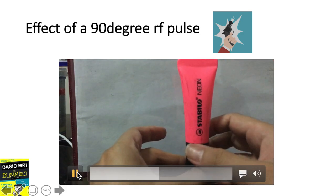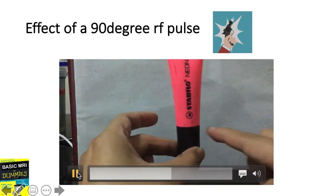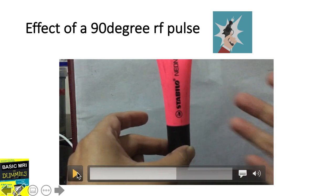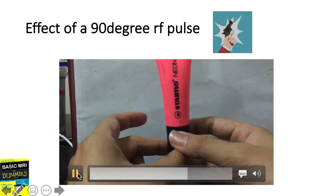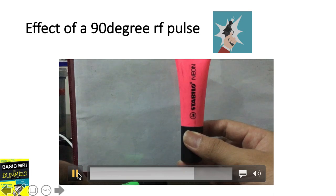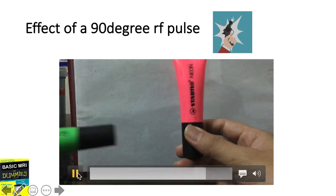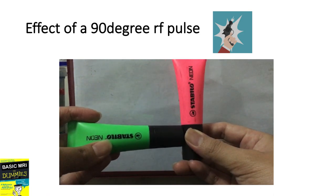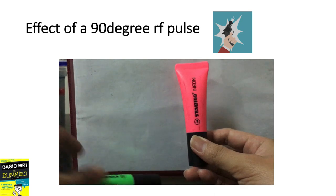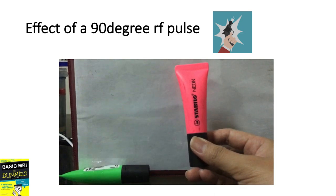At this point, does this proton have a transverse magnetization? There's none. Now, what will happen to this proton if we hit it with a 90 degree RF pulse, or an excitation pulse?